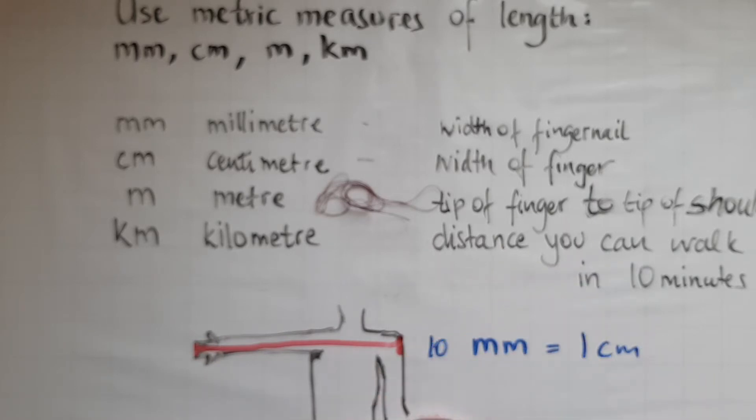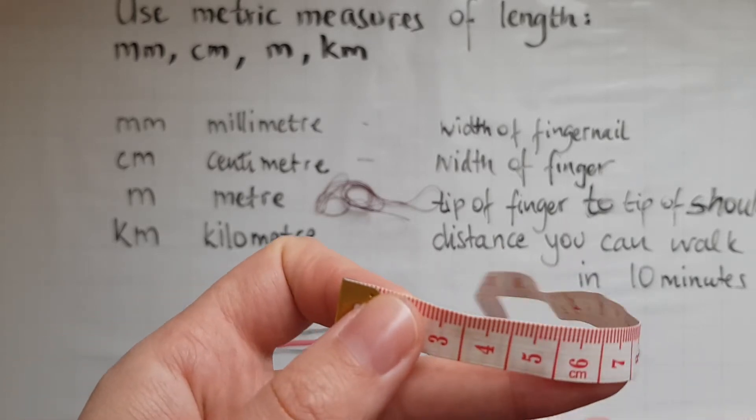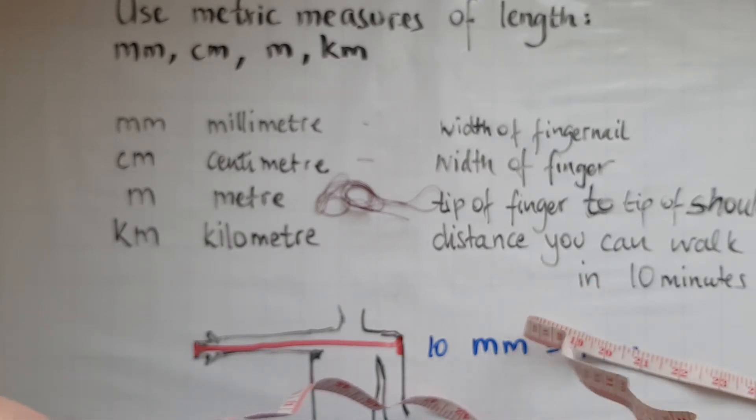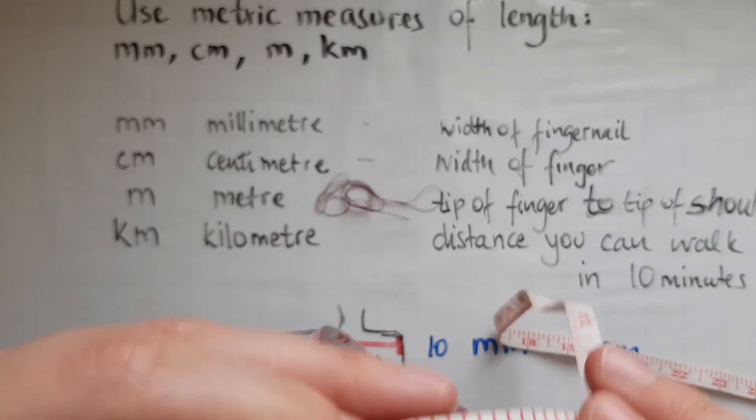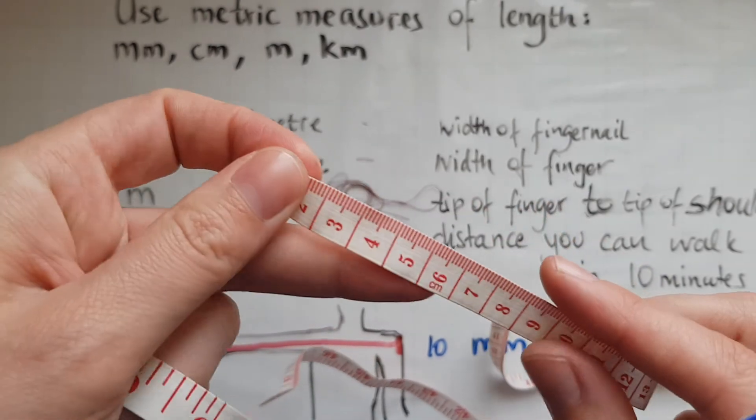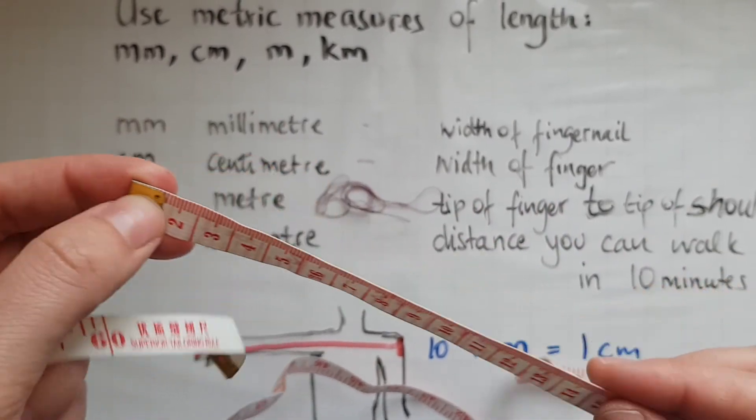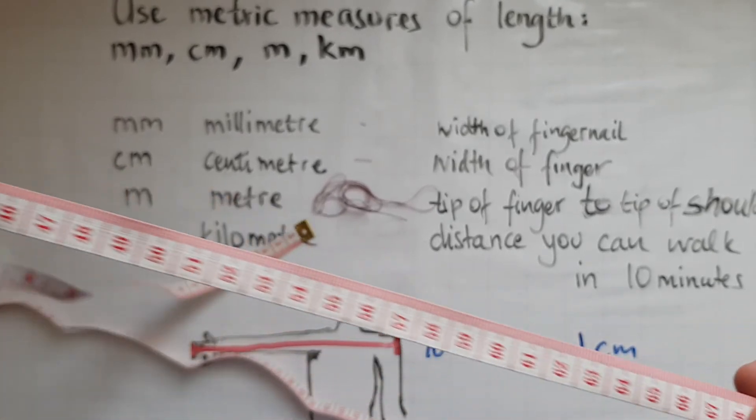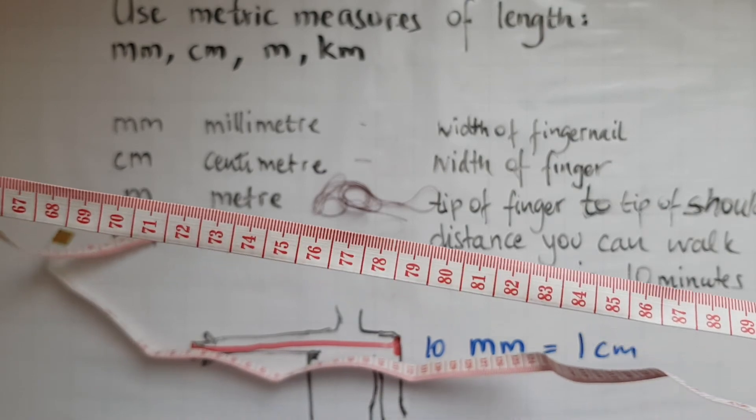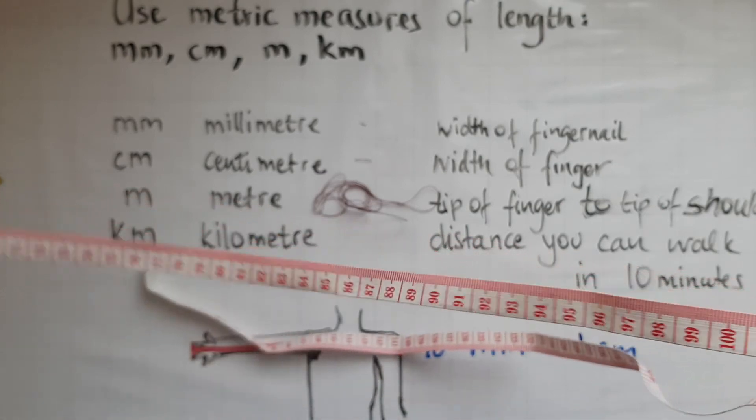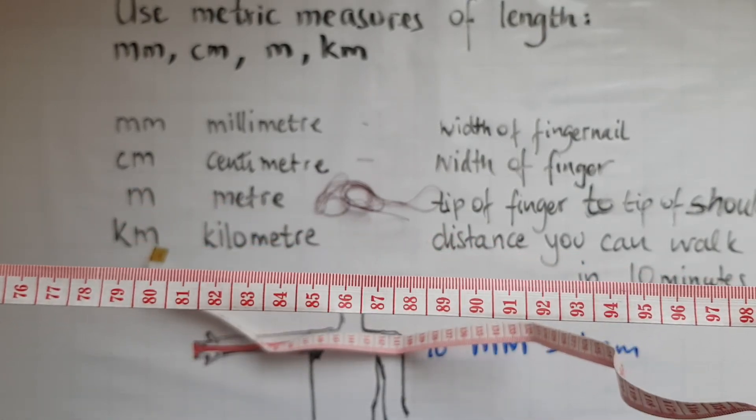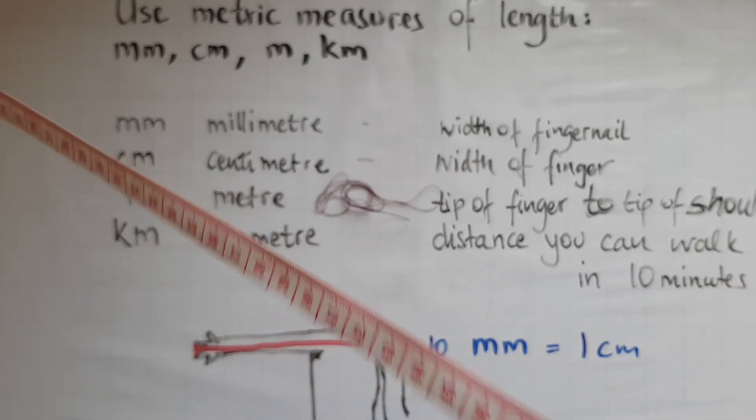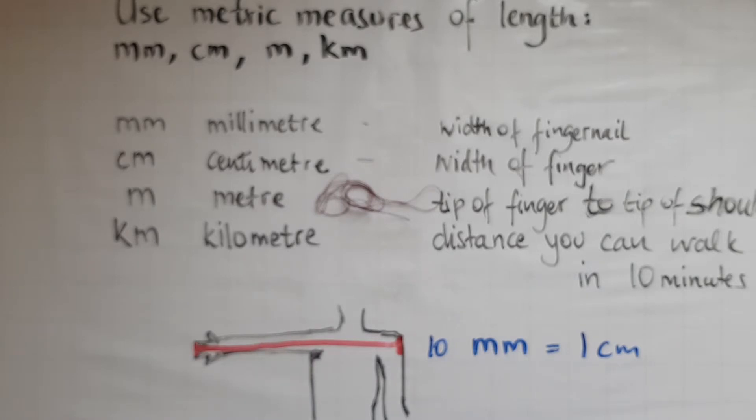So we'll start with zero. We've got it on the centimeter side because it could be on the inches as well, and we're talking about centimeters rather than inches. So we start from zero and that goes up to a hundred. So that is how long a meter is, a hundred centimeters.